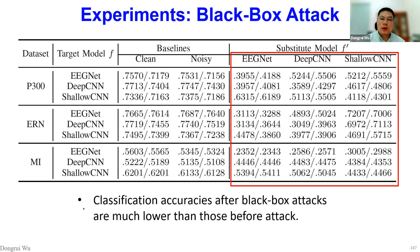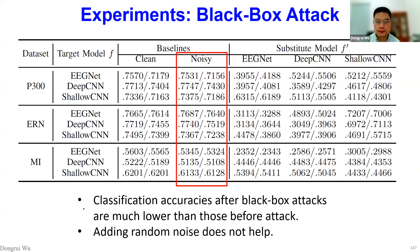For black-box attack performance, we can see that for the baseline we have quite high classification accuracy, but after black-box attack the classification accuracy is dramatically decreased. We also checked if adding random noise could degrade the classification performance — if so, we would not need to design sophisticated adversarial perturbations. But from the experimental results, random noise does not have a significant effect on classification performance, meaning we still need to use sophisticated approaches to design the perturbations.